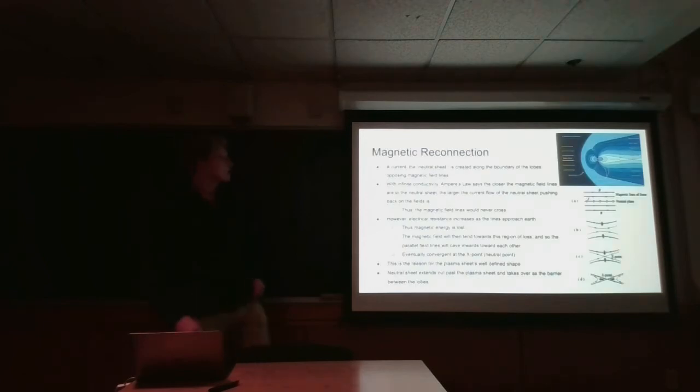So the process that causes this rigid shape is magnetic reconnection. If you think about the north lobe having a strong magnetic field going towards the Earth and the south lobe having strong magnetic fields away from the Earth, where they come together, you have two opposing magnetic fields that are strong.